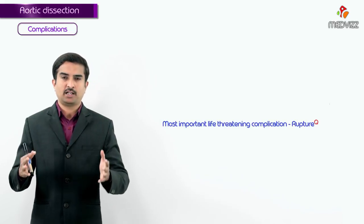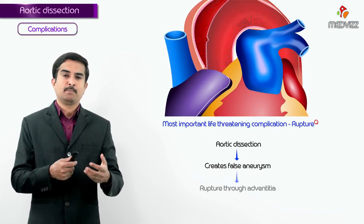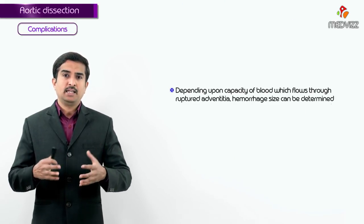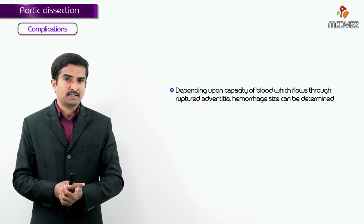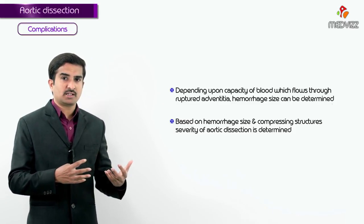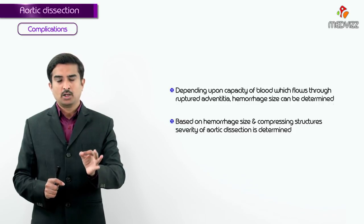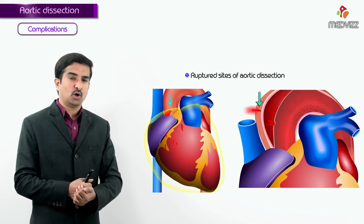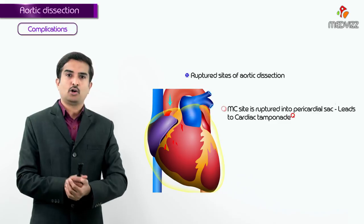The most important life-threatening complication of aortic dissection is rupture. Aortic dissection creates a false aortic aneurysm, which may rupture through the adventitia, causing massive hemorrhage. The severity depends on the volume of blood flowing through the ruptured adventitia. Most ruptured aortic dissections are catastrophic and lead to sudden cardiac death.